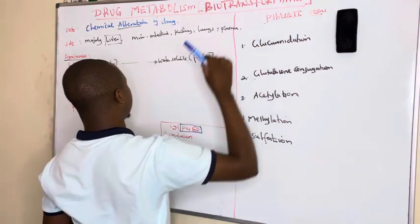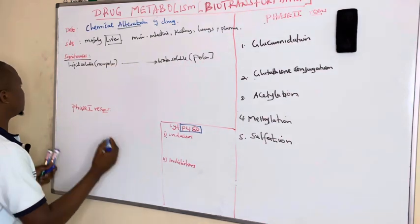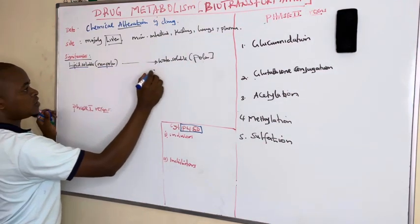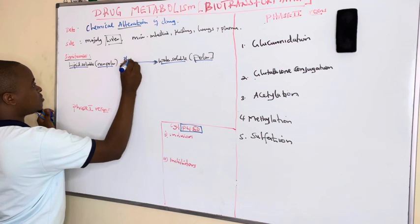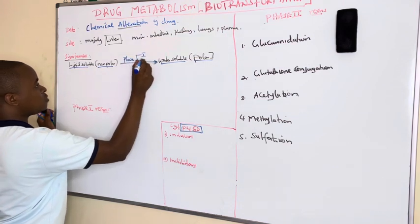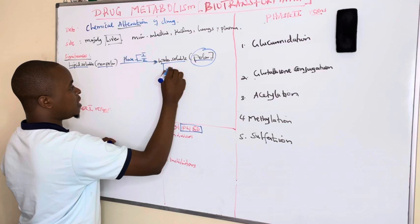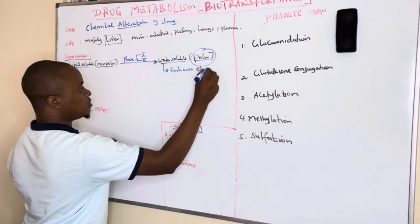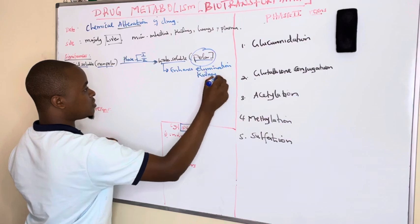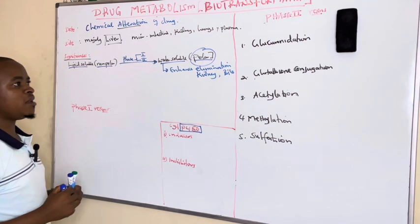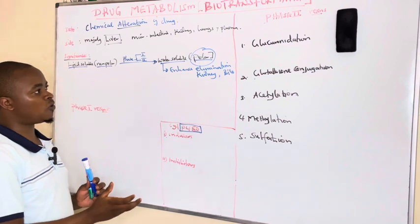The major significance of biotransformation is to convert lipid-soluble drugs — what we call non-polar drugs — into water-soluble or polar drugs, by phase 1 and phase 2 reactions. The major aim is to enhance elimination, either via the kidney (which is the major route, renal) or via bile.